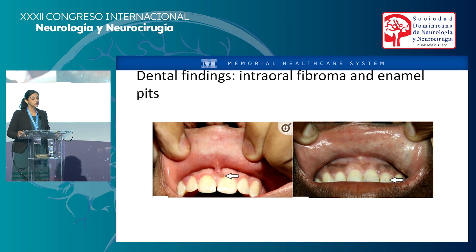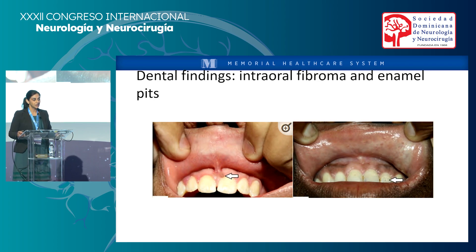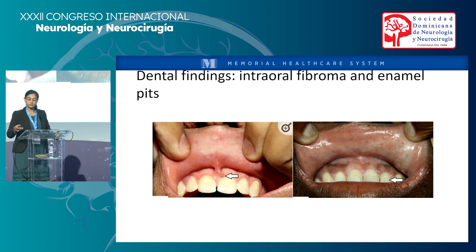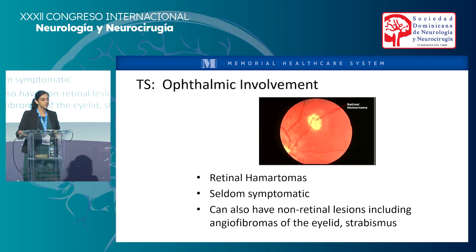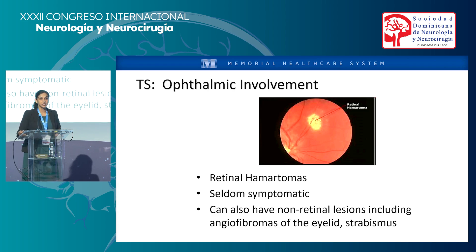You can also find oral lesions, so these patients should be seeing a dentist — something that's sometimes forgotten but is pretty classic. Intraoral fibromas and enamel pits are present, which are a little difficult to see but can be appreciated. From an ophthalmic standpoint, you can have retinal hamartomas, but they're seldom symptomatic. You can also have non-retinal lesions including angiofibromas of the eyelid and strabismus.